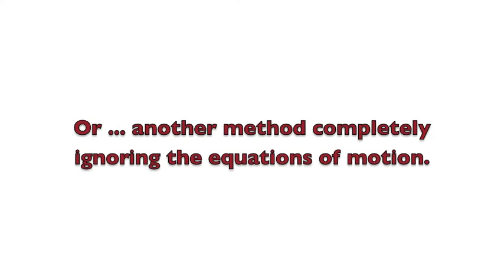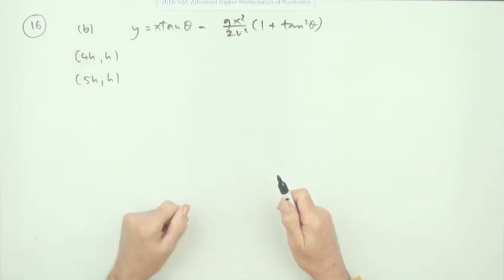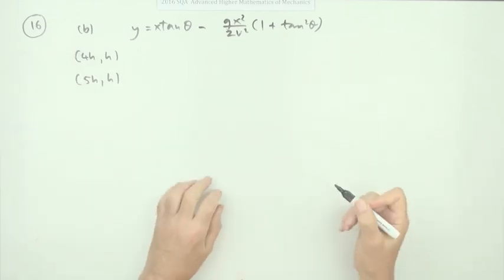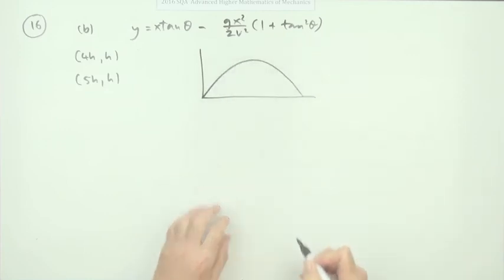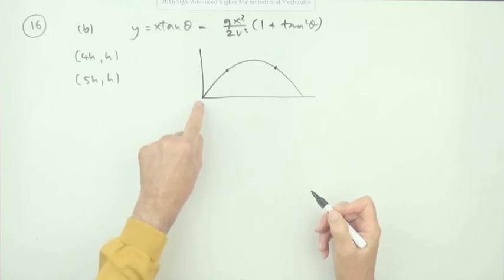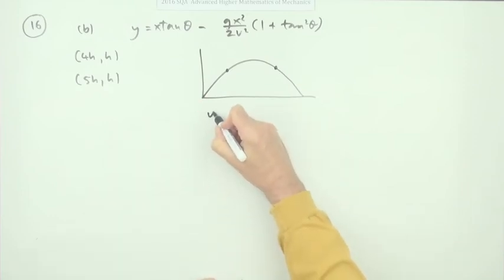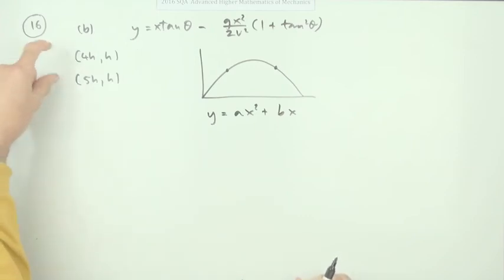There is another way. The path's a parabola. If you've got two points in a parabola that'll be sufficient to determine it. A parabola of this form that passes through the origin must have the form y equals something x squared plus something x because there's no constant term at the end.